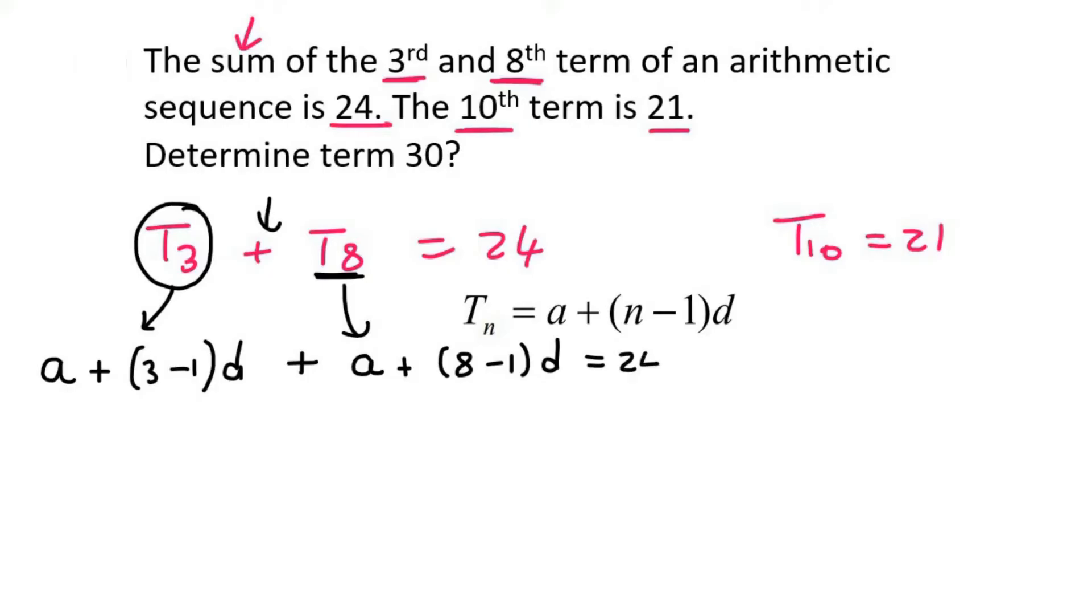We then say that that is equal to 24. I'm then going to use this piece of information, which tells us that 21 is equal to A plus, now it's term number 10, so we say 10 minus 1 times D.